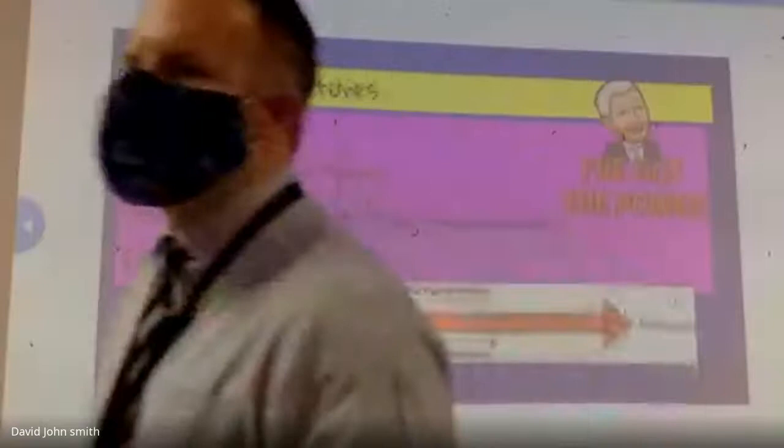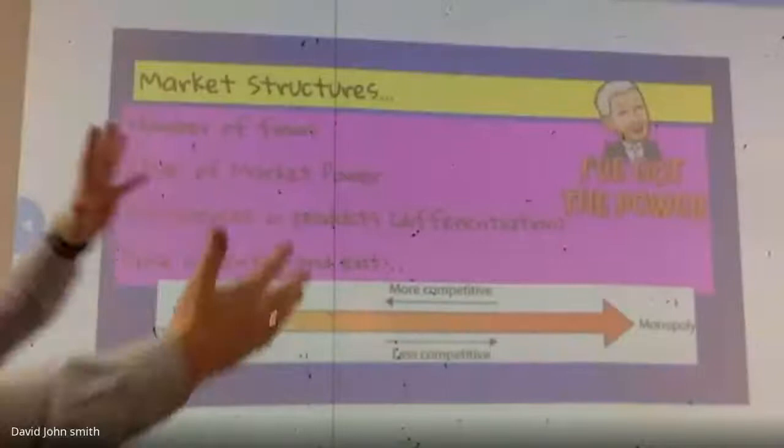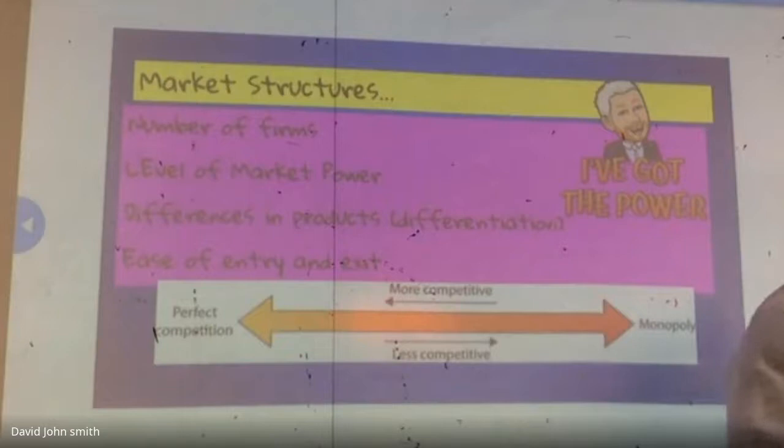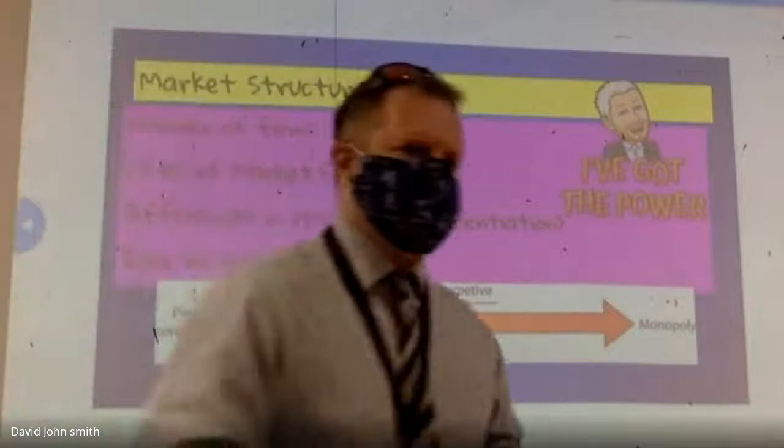So where we last left our intrepid explorers, we were discussing the ideas that you could have a market, and our market could be broken up and we could look at the different structures within it. We could talk about the businesses and whether they had a level of market power — the idea being that the more power they have, the more control over the market they have. However, the less power they have, the more competitive they are.